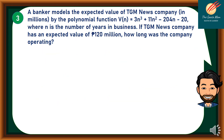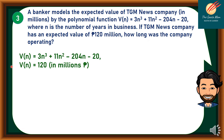Let's move on to problem number 3. A banker models the expected value of TGM News Company in millions by the polynomial function b(n) = 3n³ + 11n² − 204n − 20, where n is the number of years in business. If TGM News Company has an expected value of 120 million, how long was the company operating? The given is b(n) = 3n³ + 11n² − 204n − 20 and b(n) = 120 million.